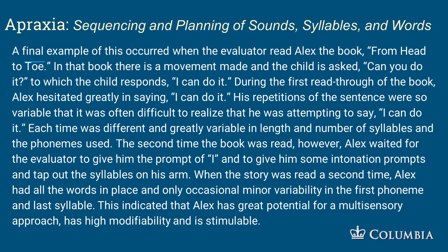A final example: when the evaluator read Alex the book From Head to Toe, the child is asked 'Can you do it?' and responds 'I can do it.' During the first read, Alex hesitated greatly in saying 'I can do it.' His repetitions were so variable that it was often difficult to realize he was attempting that sentence. Each time was different — greatly variable in length, number of syllables, and phonemes used. The second time the book was read, Alex waited for the evaluator to give him the prompt 'I,' some intonation prompts, and to tap out the syllables on his arm. He then had all the words in place with only occasional minor variability in the first and last phoneme. This indicated that Alex has great potential for a multi-sensory approach, has high modifiability, and is stimulable.